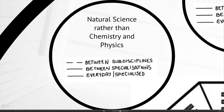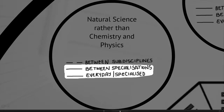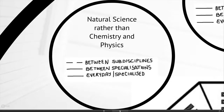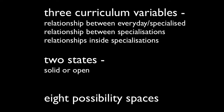Finally you have the option where you work with strong boundaries between the everyday and the specialized and between specializations, but between the sub-disciplines you radically open things out — for example when you do Natural Science rather than doing chemistry or physics separately. What that should do is give you a sense of how you actually work with the combinations of variables and states, and that gives you one of the basic working centers of how educational analysis happens.